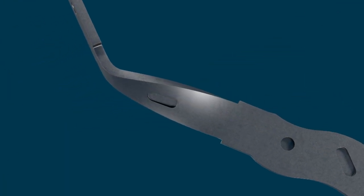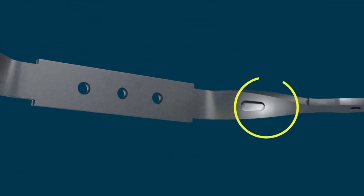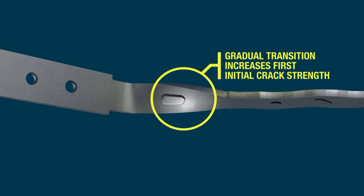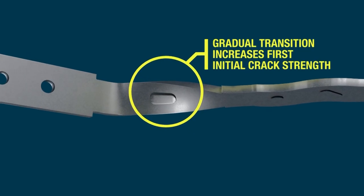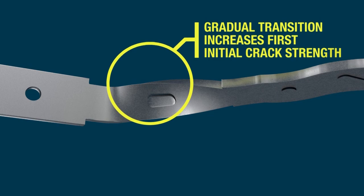This gradual transition from the face to the leg provides the Stealth connector with the highest initial crack strength in both thin and thick sections. In addition, the Stealth has the highest capacity available for most applications.